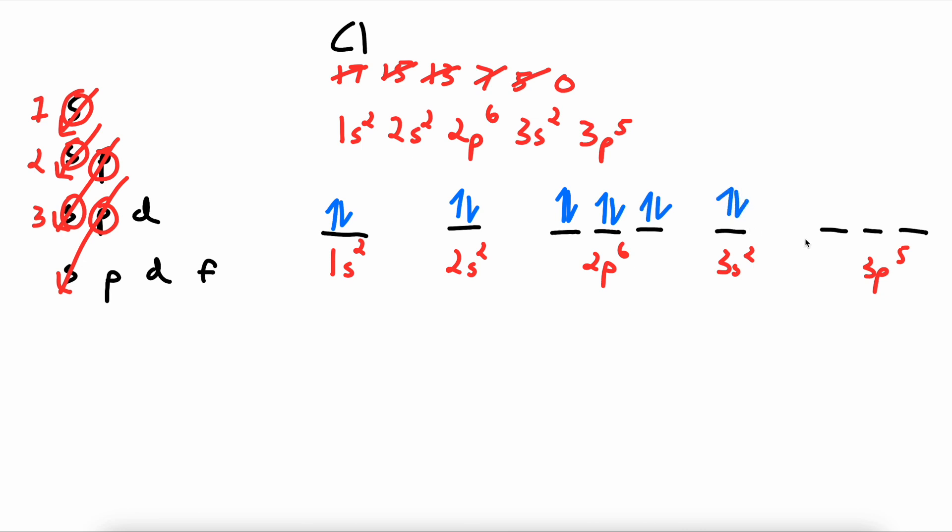We have 2 here. And then finally we have 5 here. So 1, 1, 1, 2, 2, like so. And we have a lone electron down here. This is the drawn electron configuration for chlorine.